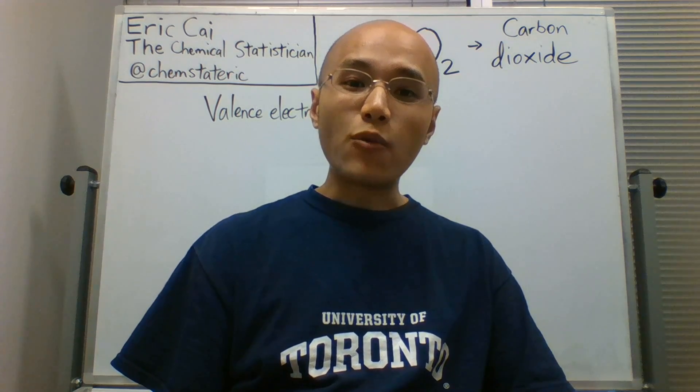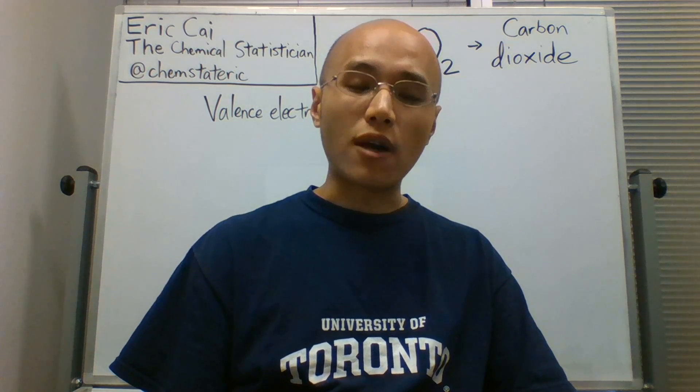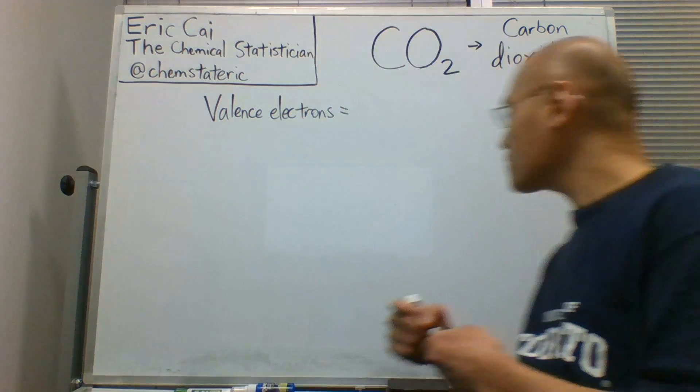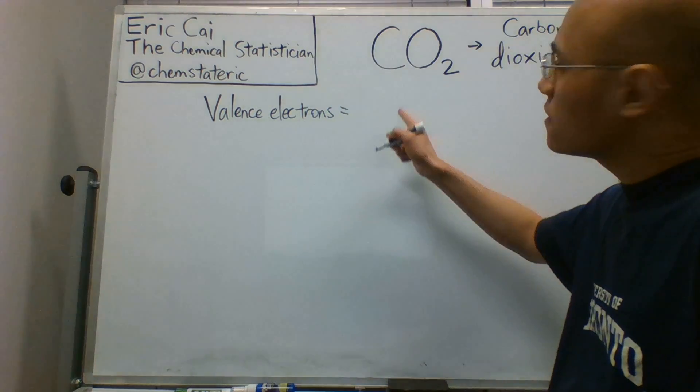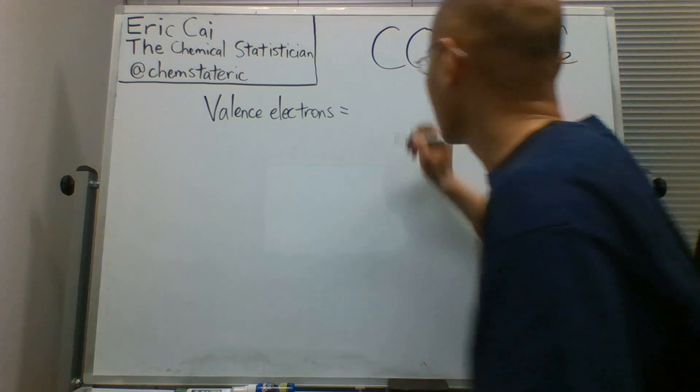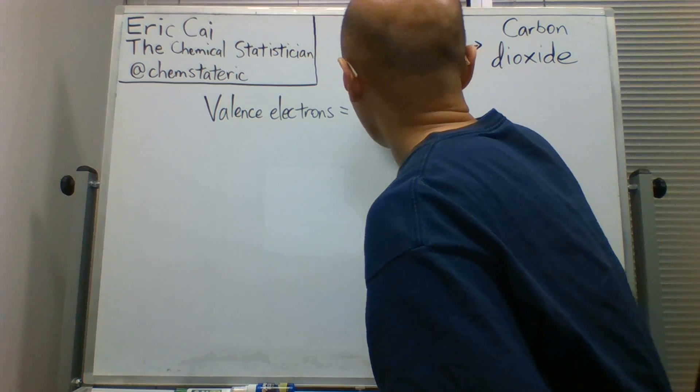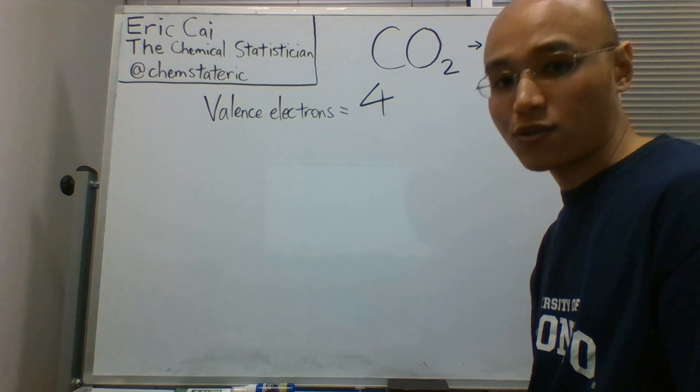To begin, we need to count the number of valence electrons in the constituent atoms. We know that carbon has 4 valence electrons, and oxygen has 6 valence electrons.